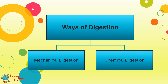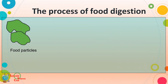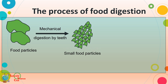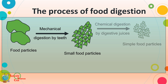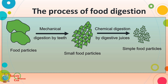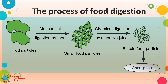Digestion occurs in two ways: mechanical digestion and chemical digestion. In a simplified process, complex food is first broken into small food particles by mechanical digestion, which is mainly done by teeth. Those small food particles are then chemically digested by digestive juices. Finally, the simple food is absorbed by the body.